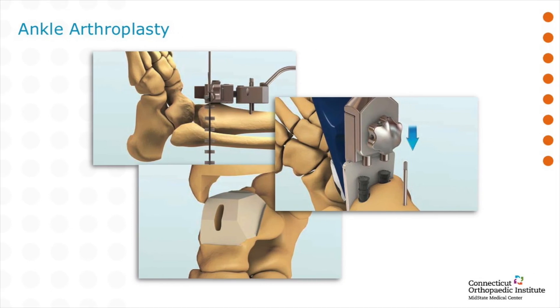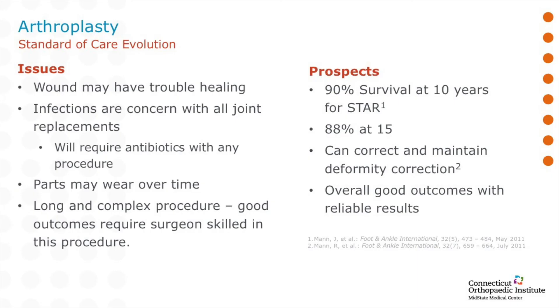Interoperatively, we start by measuring the appropriate amount of bone to be resected, and ultimately the bone is resected, prepared for the implant, and then the implant is inserted. Even with great solutions, there are always potential issues with total joint replacements — there's always the concern of infection and the concern that the implants will wear out. However, total ankle replacements have been very successful: 90% implant survival at 10 years and 88% at 15 years is a very promising and positive outcome.